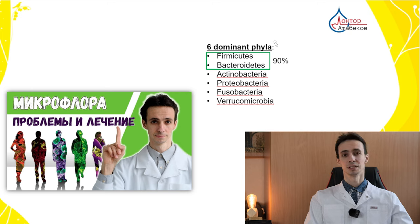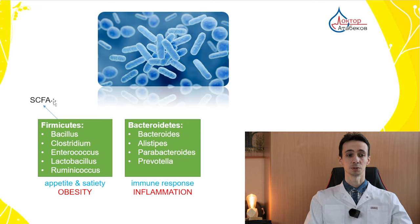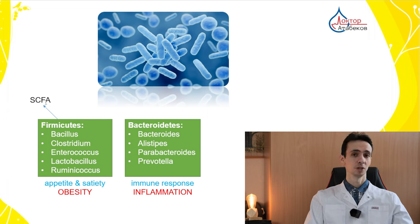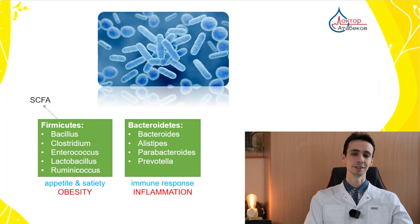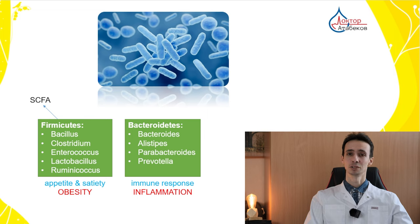There are 6 dominant types of bacteria in our guts. 90% are Firmicutes and Bacteroidetes. Firmicutes produce short chain fatty acids — substances that are so important for regulation of our metabolism. They regulate brain function, even our mood, our heart, lungs, blood vessels, the work of our liver, and the production of our fat.